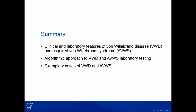In summary, today we discussed the general principles and laboratory and clinical features of congenital and acquired von Willebrand syndrome, the seven tests available to evaluate VWF disease, and two cases illustrating how we use this stepwise algorithm to render a laboratory diagnosis of either congenital VWD or acquired von Willebrand syndrome. Thank you very much.